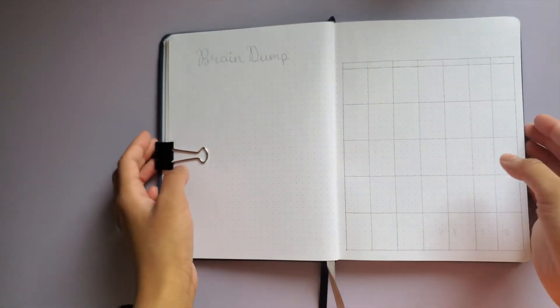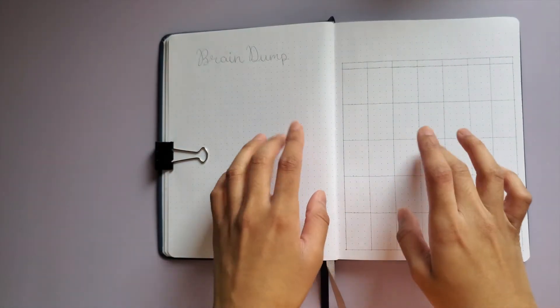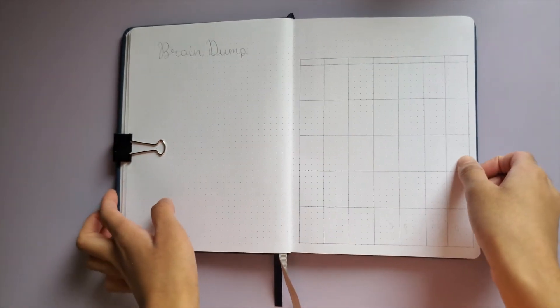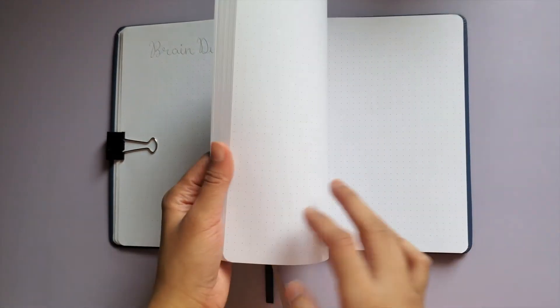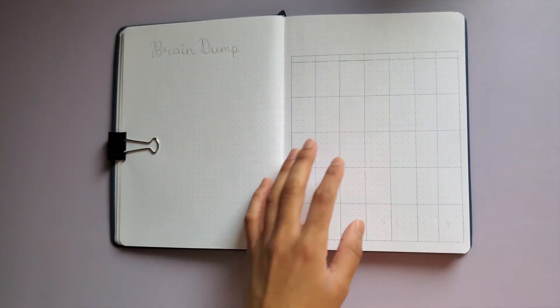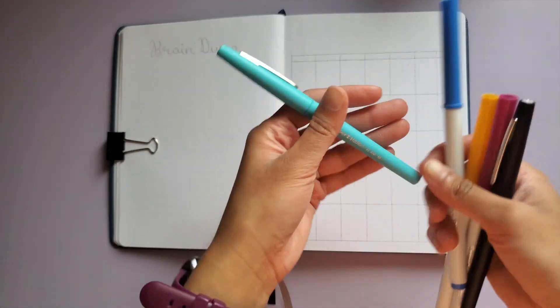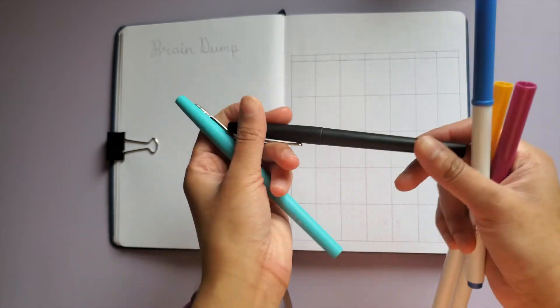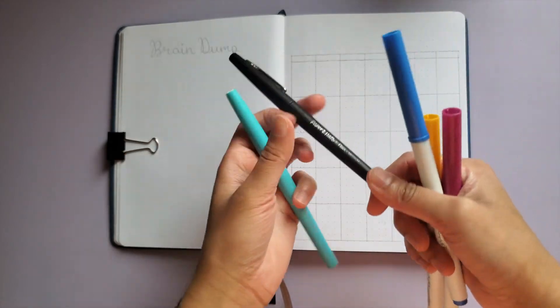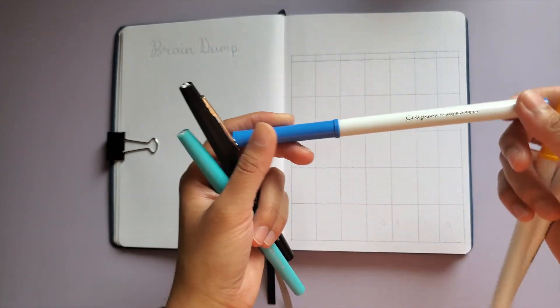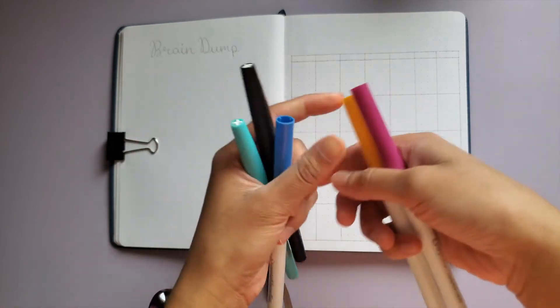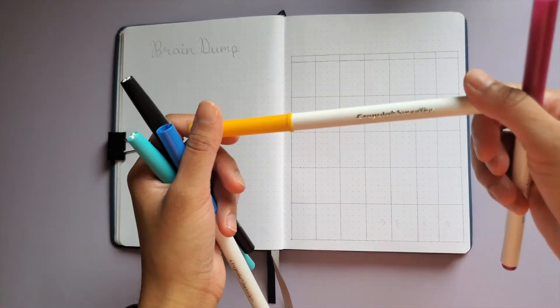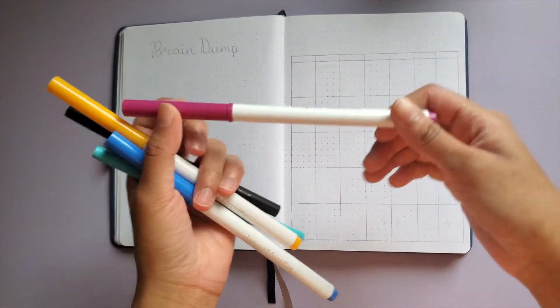Hi guys, today I am going to be setting up my August reading journal in my Michael's journal. These are the supplies I'll be using: an aqua colored Papermate Flair, a black Papermate Flair for the outlines, a blue Crayola Super Tip, a gold marker, and a magenta one.